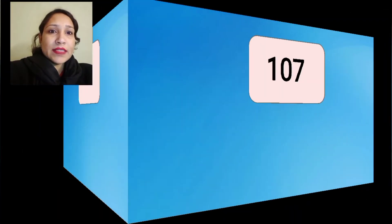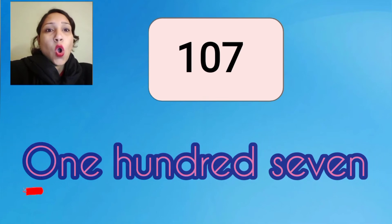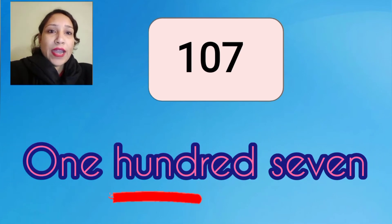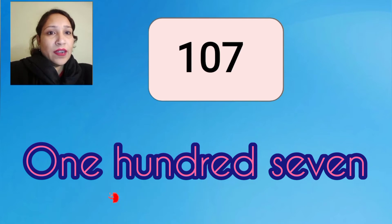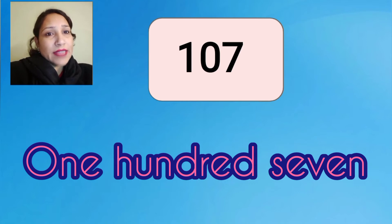The next number is 107. The spelling of 107 is O-N-E, one; H-U-N-D-R-E-D, hundred; S-E-V-E-N, seven. 107: one hundred seven.